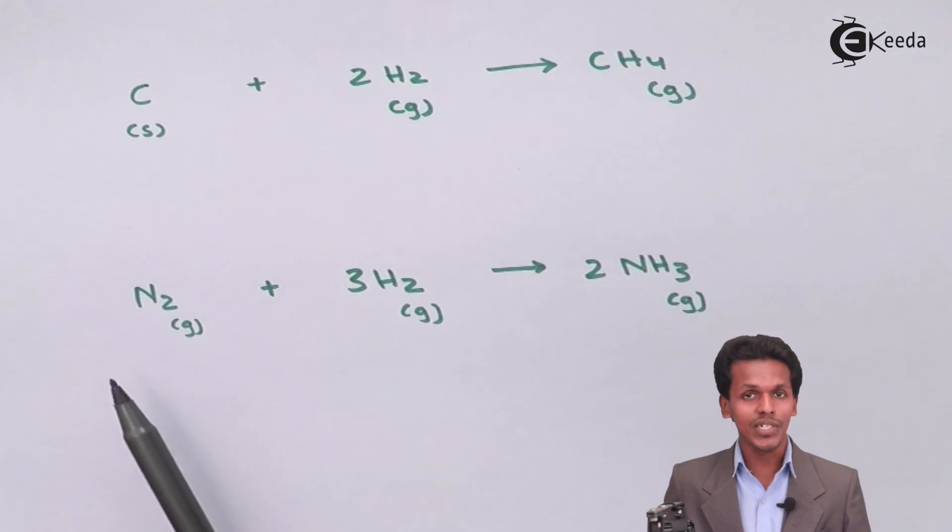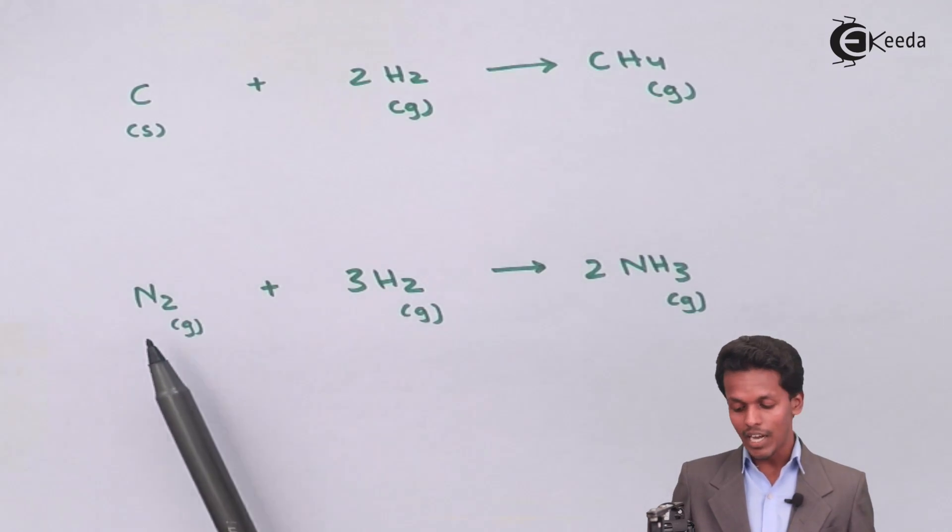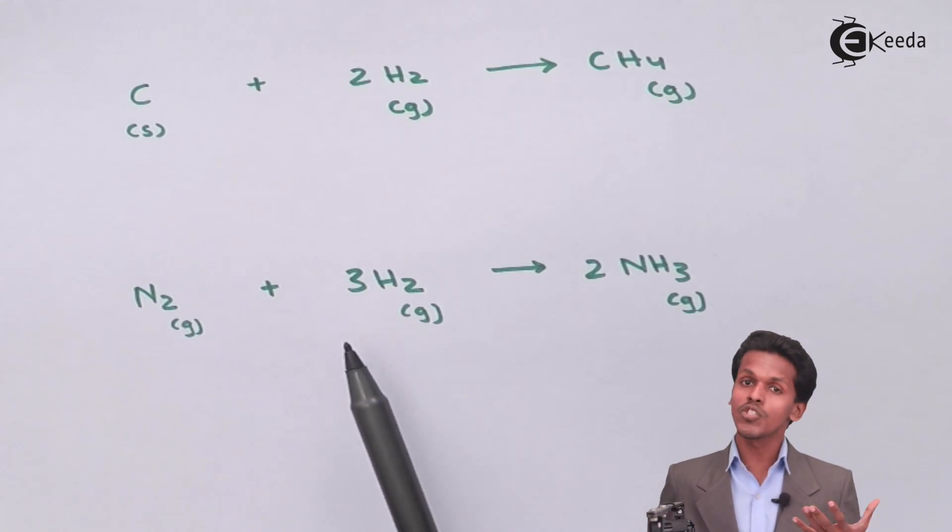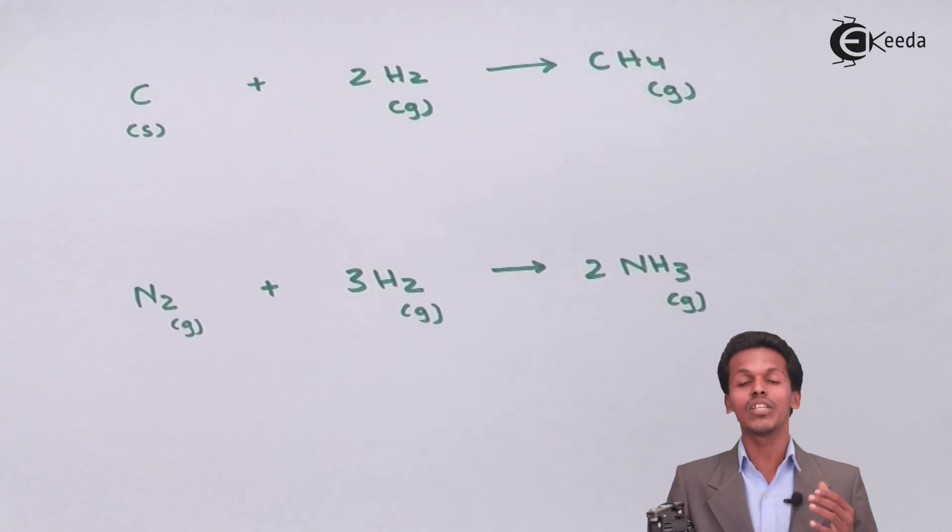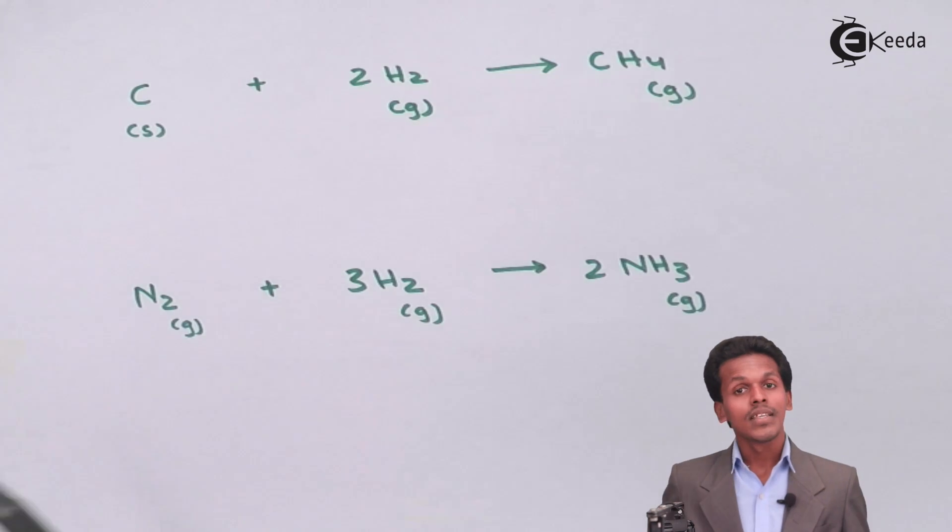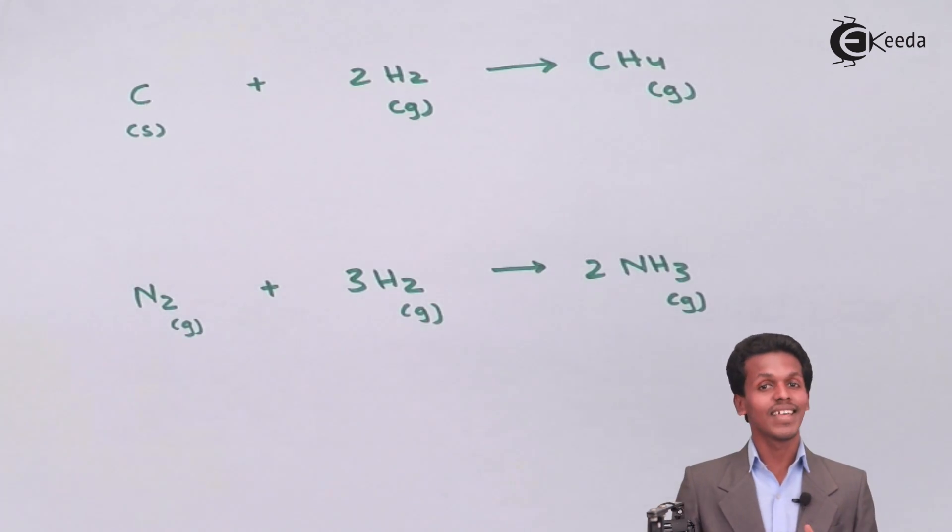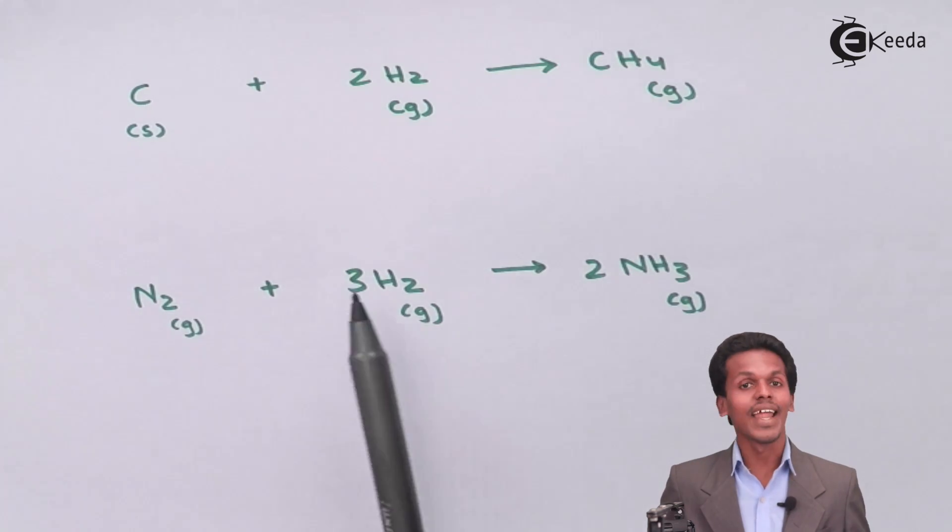In this process, nitrogen which is present in a gaseous state will react with hydrogen which is also present in a gaseous state. Both have different properties from each other. They will react with each other so as to produce ammonia, and ammonia has properties different from that of nitrogen and hydrogen.